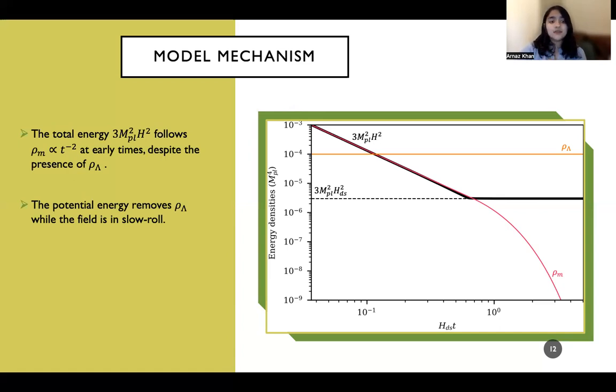And what is actually happening behind the scenes is that the potential energy is removing rho lambda. And this is done while the field is slow roll. Or you can say that the field is small compared to its mass scale. Now we see that this h squared term approaches a desitter attractor asymptotically at the end of matter domination. So you've got the matter era replicated, and now a constant desitter state for H, which will give rise to accelerated expansion at a scale much lower than rho lambda.